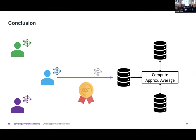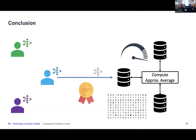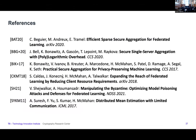To conclude, we have a federated learning scheme with a distributed aggregator setup where the client communicates the same amount of information as in a privacy-free setting. We achieve very fast aggregation thanks to the SEPAC technique and the B2A arithmetic approximation, and we tackle malicious clients by providing a defense scheme. These are the references used in the presentation.